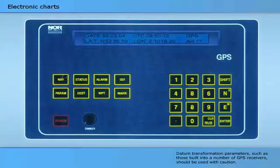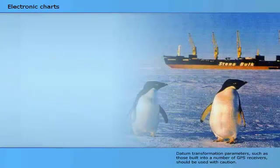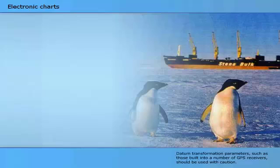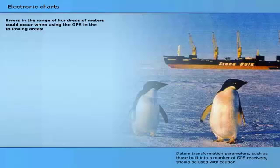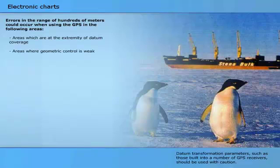Datum transformation parameters, such as those built into a number of GPS receivers, should be used with caution. These transformation parameters may be based on limited or provisional data, or they may represent an average across a wide area. Errors in the range of hundreds of metres could occur when using GPS in the following areas: areas which are at the extremity of datum coverage, areas where geometric control is weak, and areas where survey data is too old.